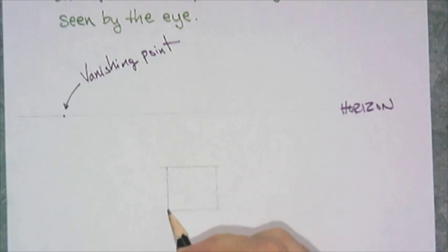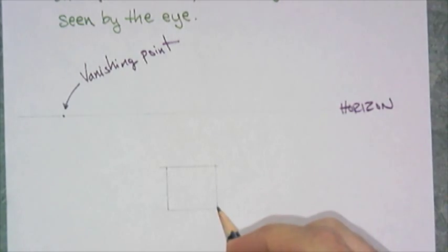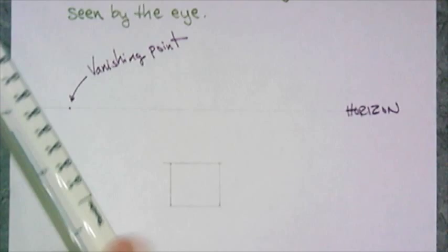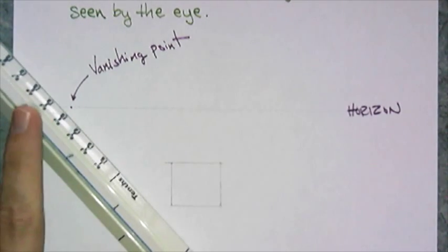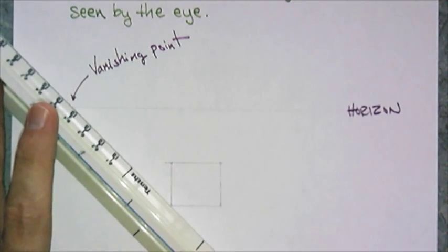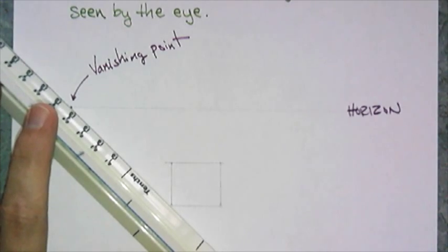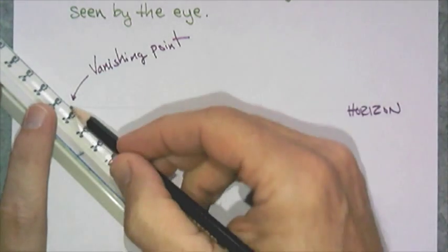I have four vertices, and what I need to do is make a line that connects that vanishing point to each vertex — so four vertices, four lines.